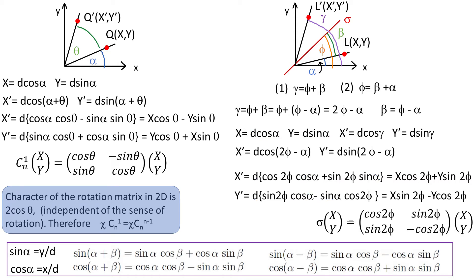The reflection matrix in 2D will always have character equal to 0, regardless of the angle, which is a very satisfying result.